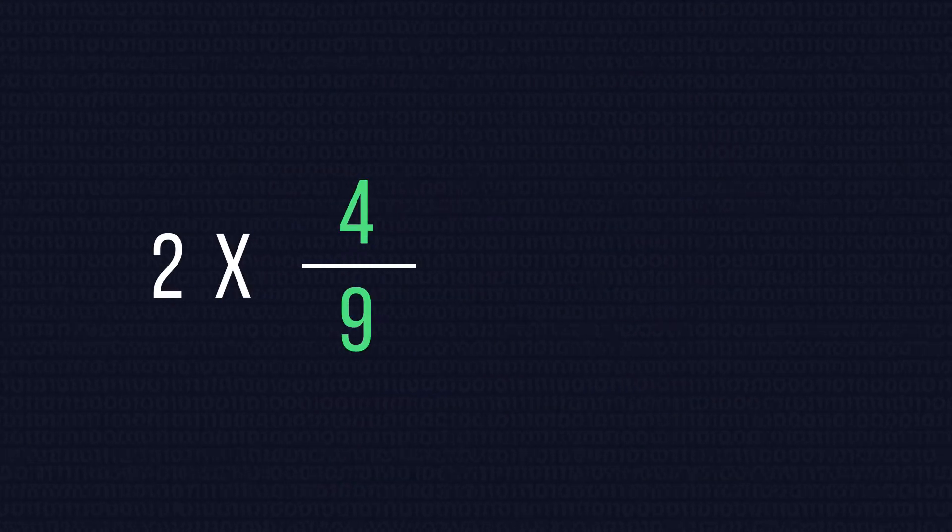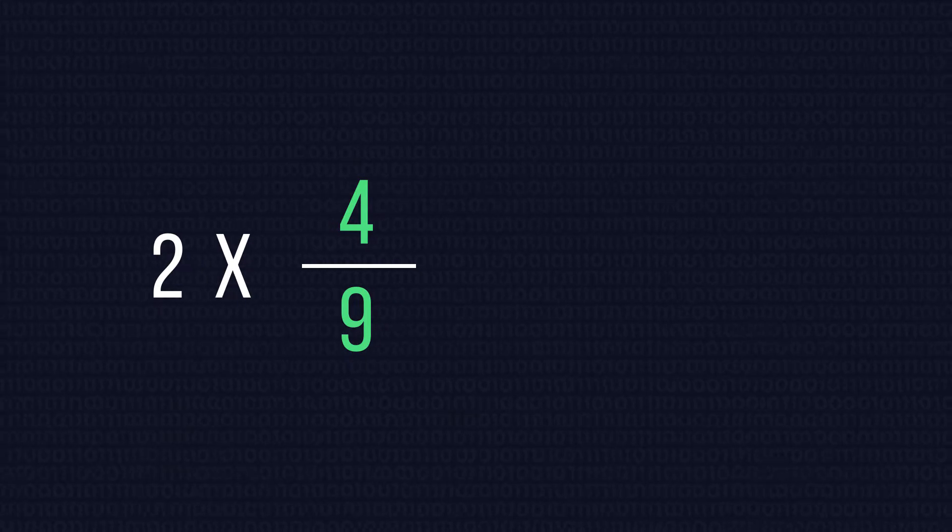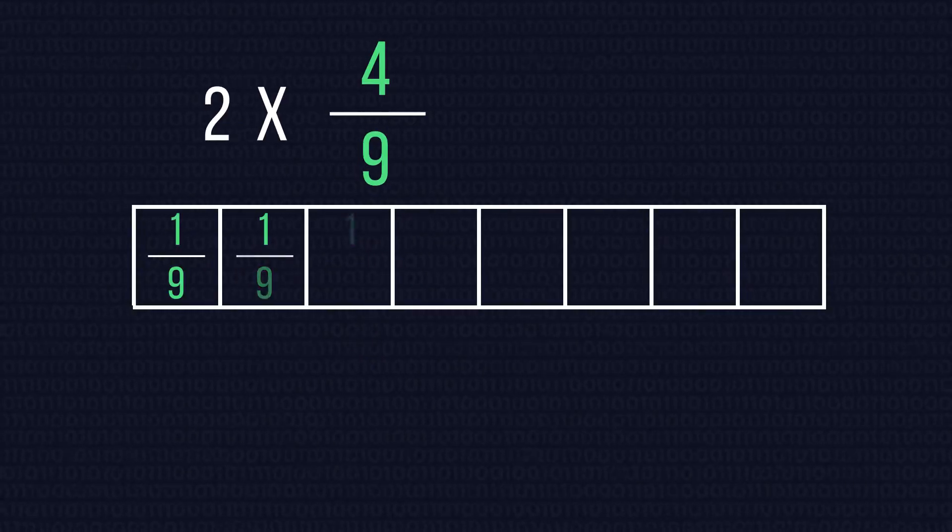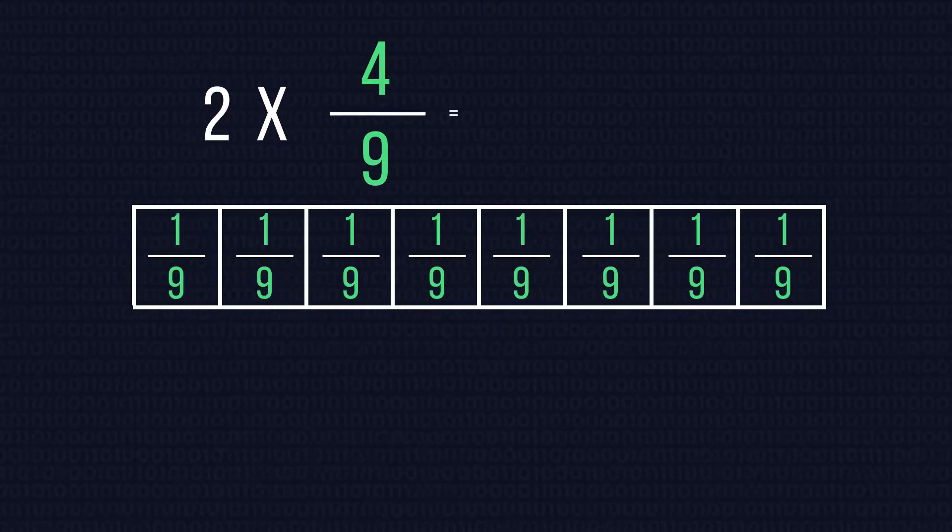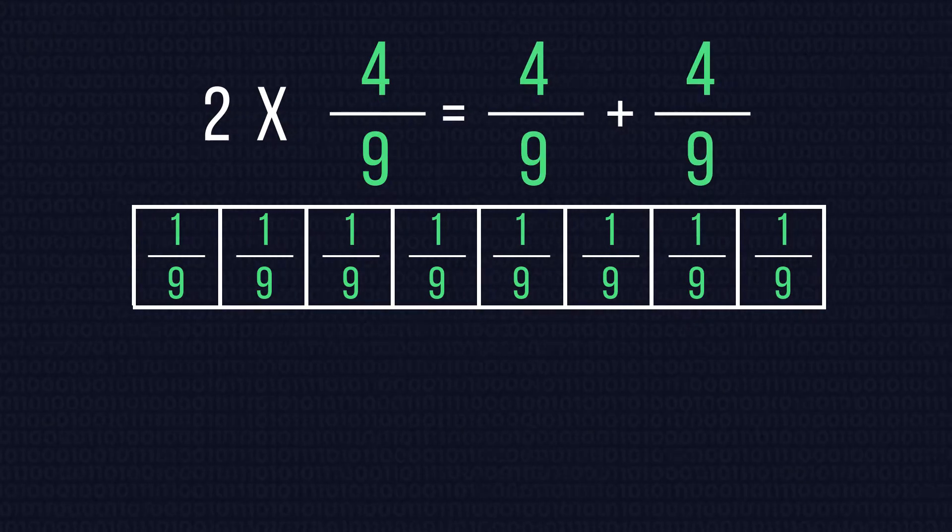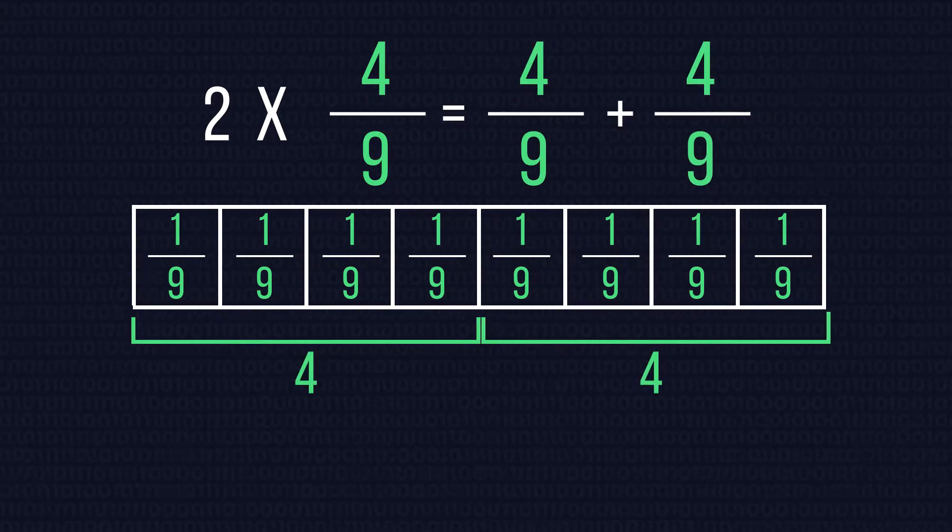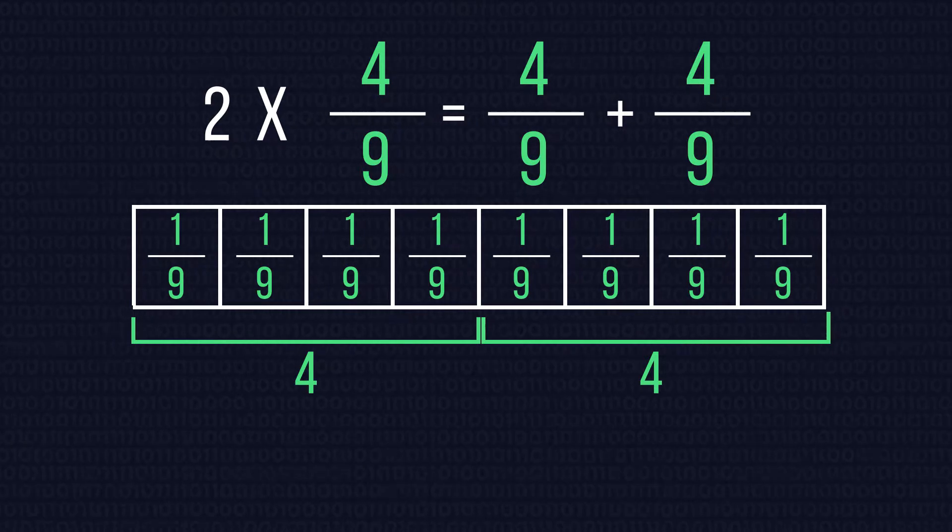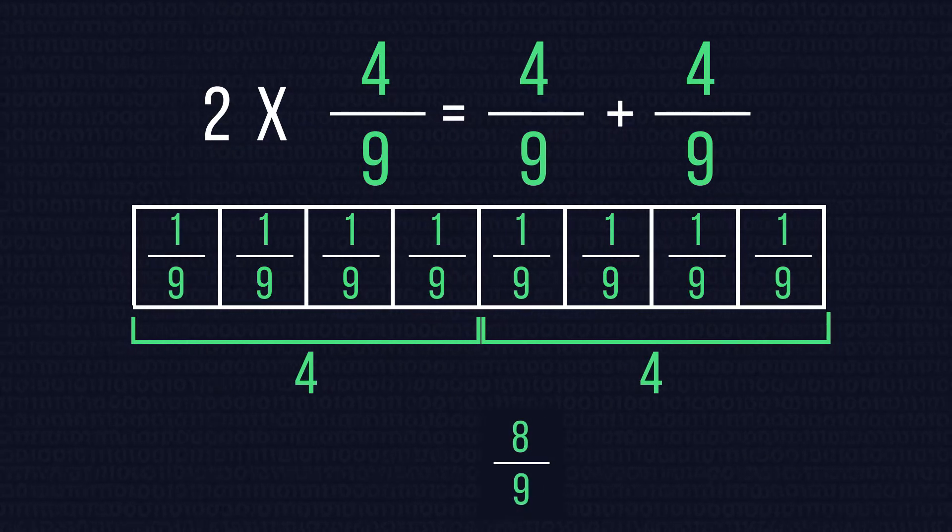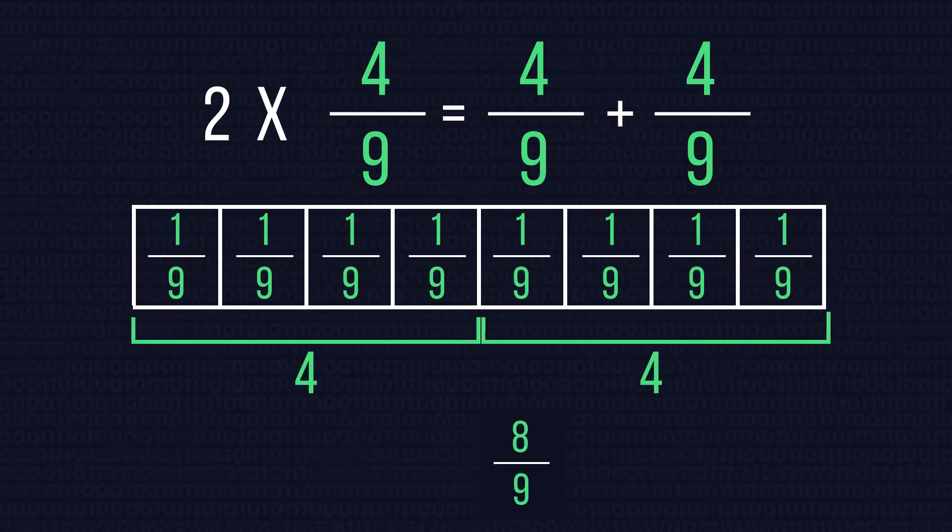Consider 2 times 4 ninths. Because basic multiplication is the same as repeated addition, this is the same as 4 ninths plus 4 ninths. From the diagram we can see that this gives us the fraction 8 over 9 because we have 8 ninths.